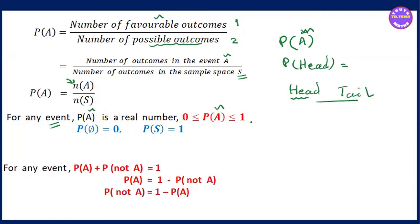0 is less than or equal to P(A), less than or equal to 1. If we get the point of 0, that is P of phi. If we get the probability term, we can get the probability term of P of phi — the probability of zero — so if we think of the probability of 0, we can't be able to calculate it.